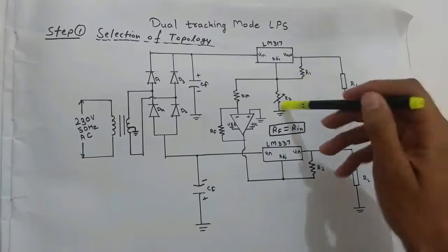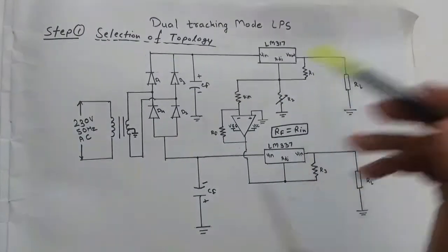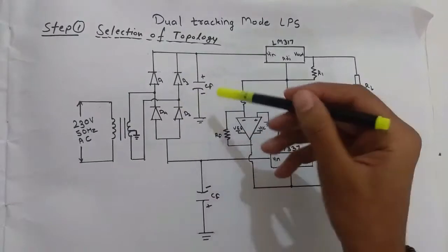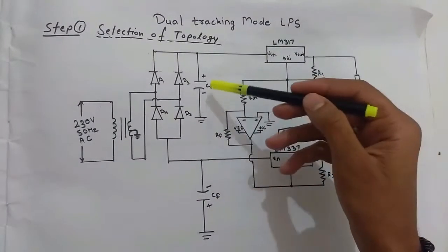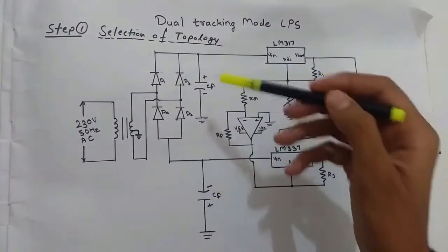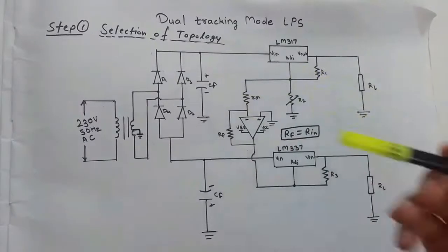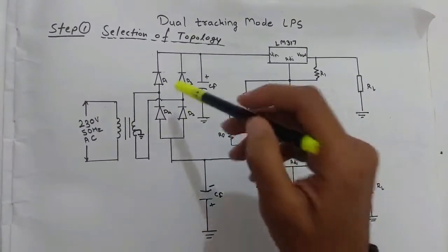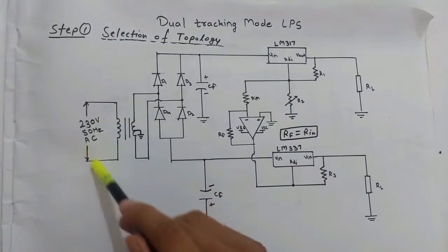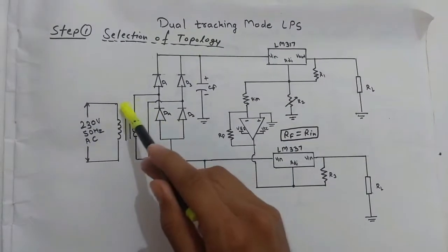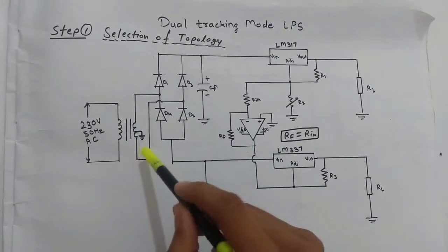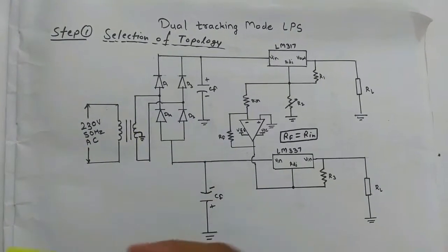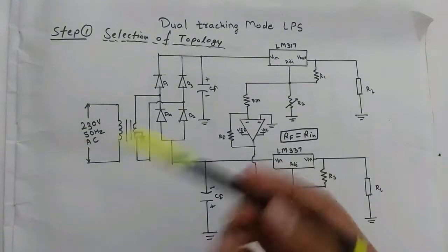These two are the adjustable resistances and these two are the feedback capacitors. The electrolytic capacitors are connected in opposite manner. These are the rectifier diodes connected in bridge format, and this is the center-tap transformer — the meaning of which was covered in the previous video.